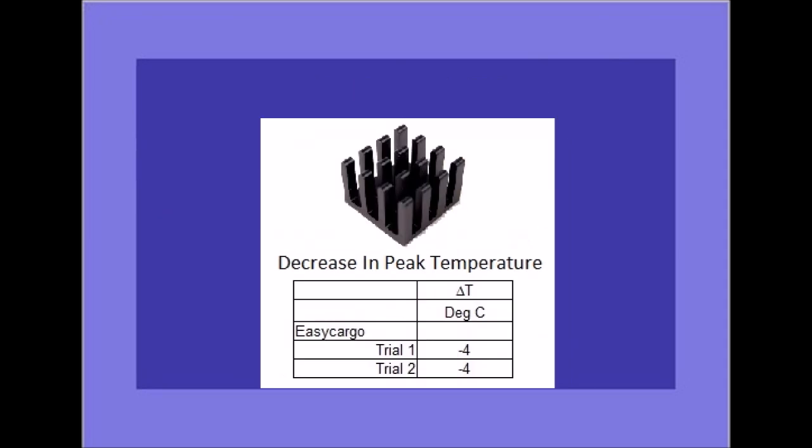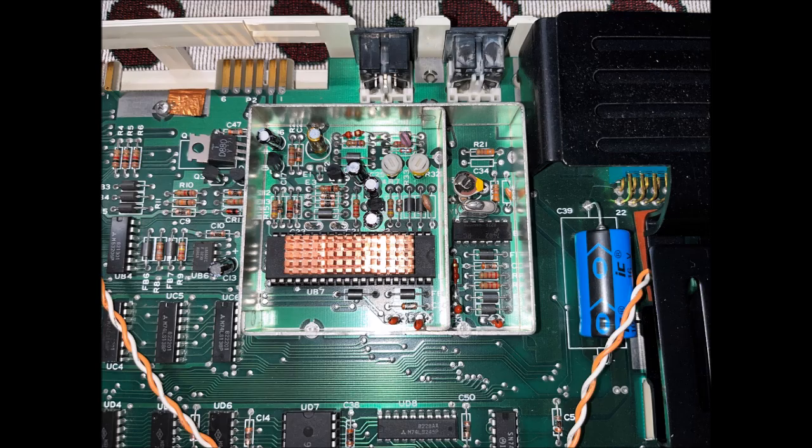The Easy Cargo heatsinks fared much better. In two trials I did, they each decreased the maximum temperature rise by four degrees Celsius. So instead of having a 21 degree Celsius temperature rise, we only had 17 degree rise in temperature. I'm definitely going to remove the DFrobot heatsinks from at least two VIC-20s.